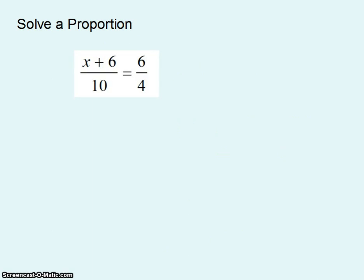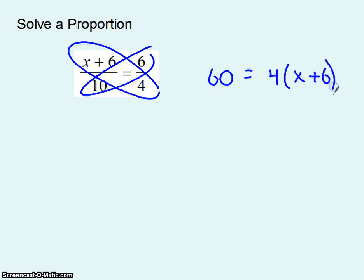Here's another example. Same idea. 60 is supposed to be equal to 4 times x plus 6. Again I used parentheses on that to remind myself multiply the 4 times everything up here not just the x or just the 6. Solving this I'll just use classic algebra techniques.